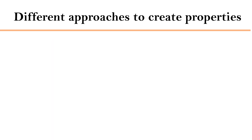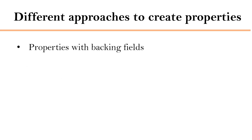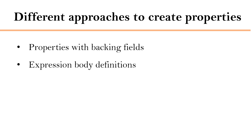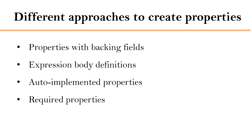As per MSDN, there are different approaches to create properties. The first one is properties with backing fields — which is what we have seen in our example. Then there are expression body definitions, auto-implemented properties, and required properties.